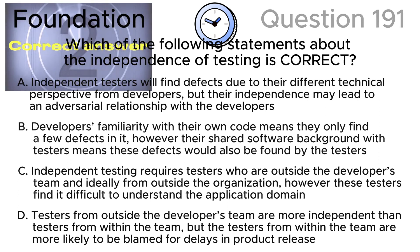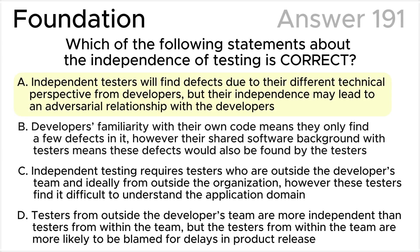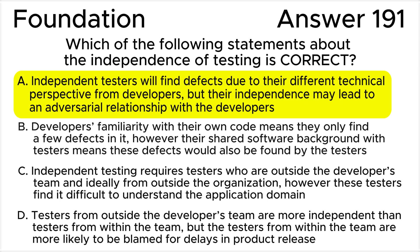The correct answer is A according to the ISTQB syllabus. The primary benefit of independence in testing is that testers are more likely to identify different types of failures and defects compared to developers, due to their varied backgrounds, technical viewpoints, and potential biases including cognitive bias. However, the main disadvantage is that testers may become isolated from the development team, leading to communication problems, a lack of collaboration, and potentially an adversarial relationship.